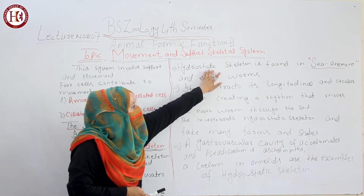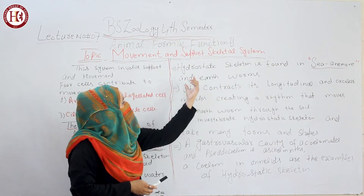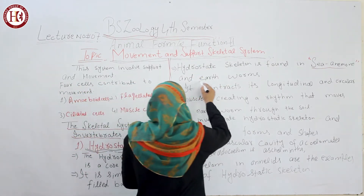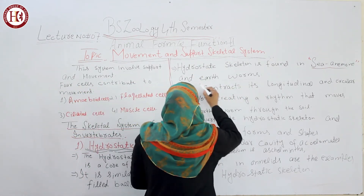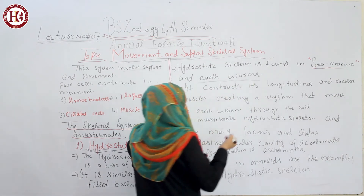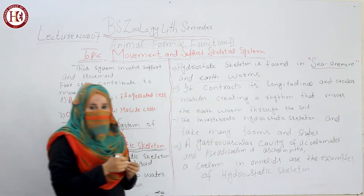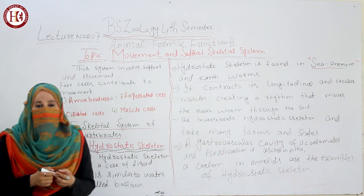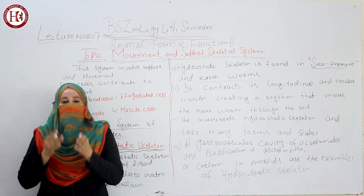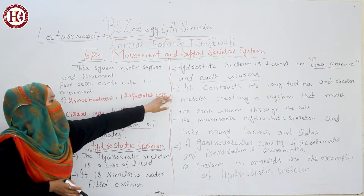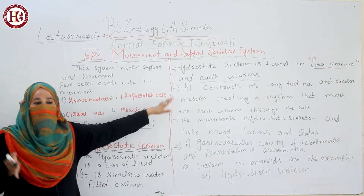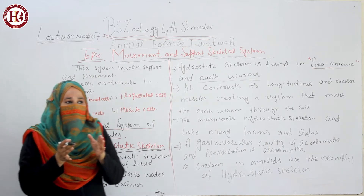The hydrostatic skeleton is found in sea anemone and in earthworms. This is a very important MCQ — in which organisms is the hydrostatic skeleton found? It is found in sea anemone and in earthworms.